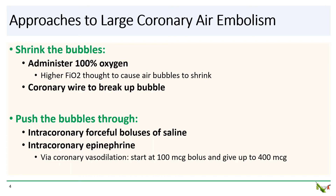Giving 100% oxygen works because nitrogen is the largest component of air. So a higher FiO2 causes the air bubbles to shrink by allowing nitrogen to diffuse down its concentration gradient out of the bubble.